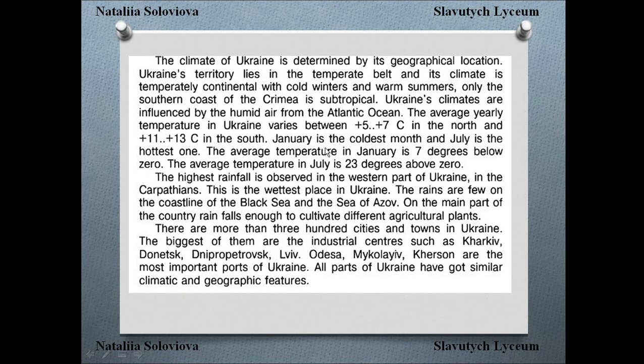January is the coldest month and July is the hottest one. The average temperature in January is 7 degrees below zero, and in July it is 23 degrees above zero. The highest rainfall is observed in the western part of Ukraine — in the Carpathians — which is the wettest place in Ukraine. The rains are few on the coastline of the Black Sea and the Sea of Azov.